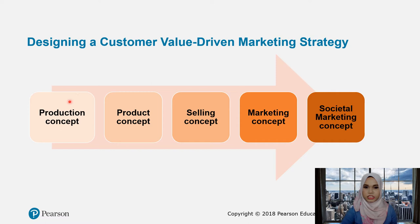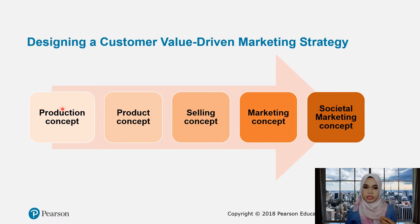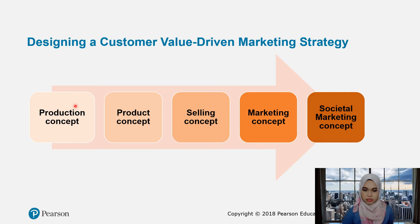Let's look at this particular diagram, which shows the evolution of how the customer value-driven marketing strategy is formed — from the production concept, the product concept, selling concept, marketing concept, and to the societal marketing concept. In the production concept, the organization thinks about their internal capabilities: what they do best is to produce the product based on their internal resources and expertise. They focus on the production of that product, caring about the quality and selling it to all customers, assuming everybody will purchase the product. The production concept focuses on internal resources and internal capabilities.